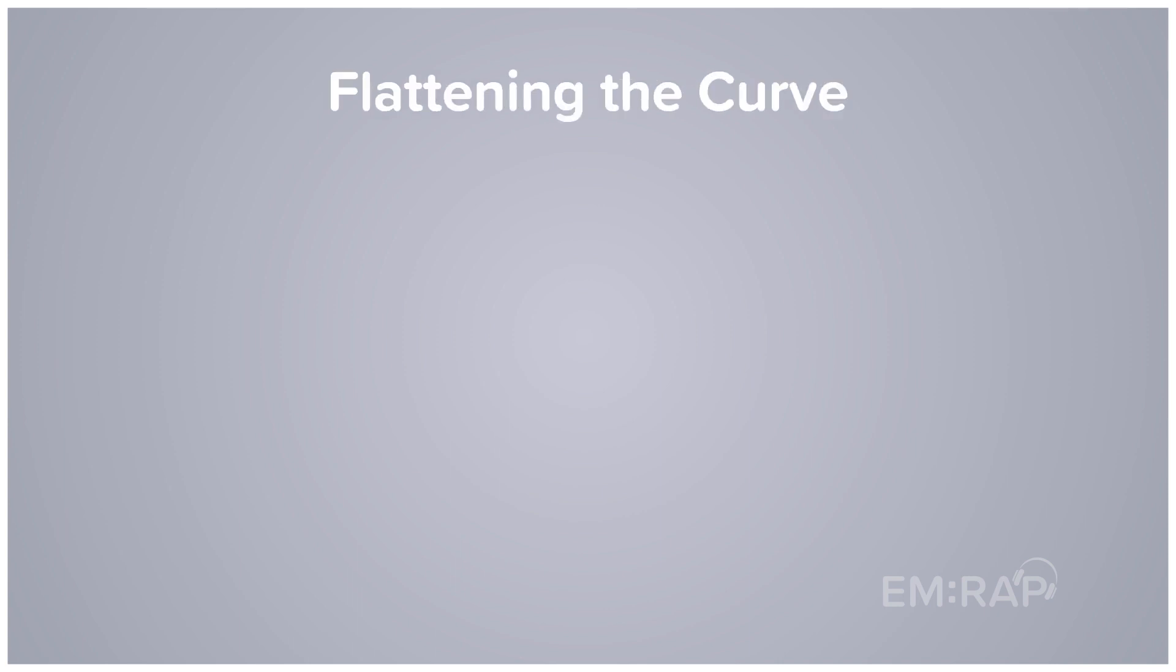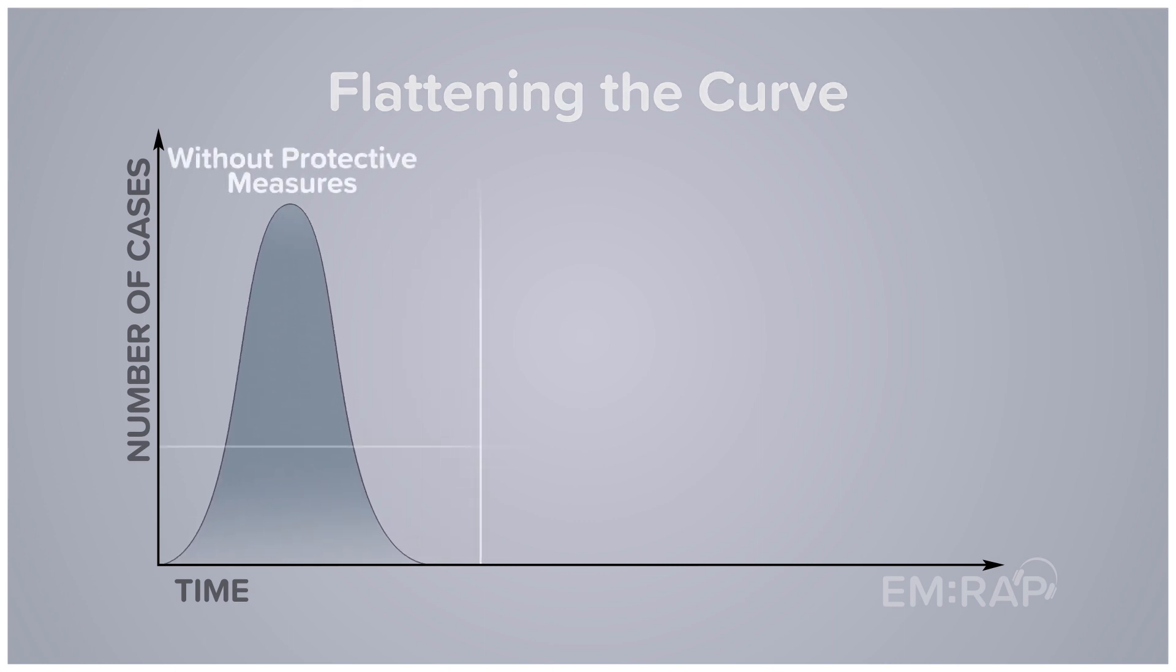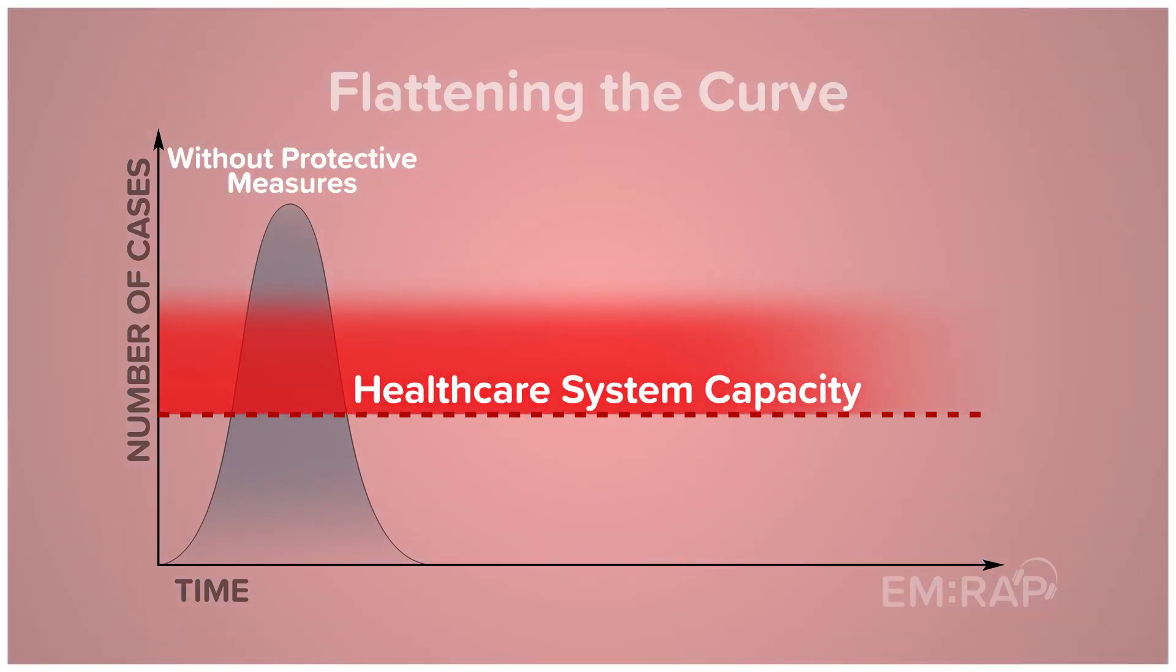You've heard the term flattening the curve, but what does it mean? Well, if you have a virus that's very infectious and you just let it run its normal course, then a lot of people get sick in a short period of time. That can overwhelm the healthcare system if a significant percent of those people get seriously ill, as with this current coronavirus.